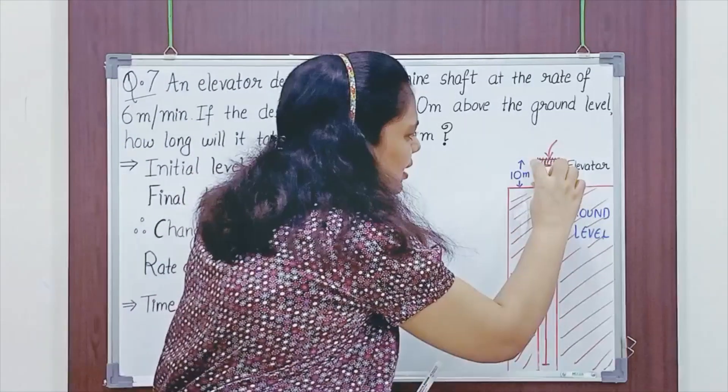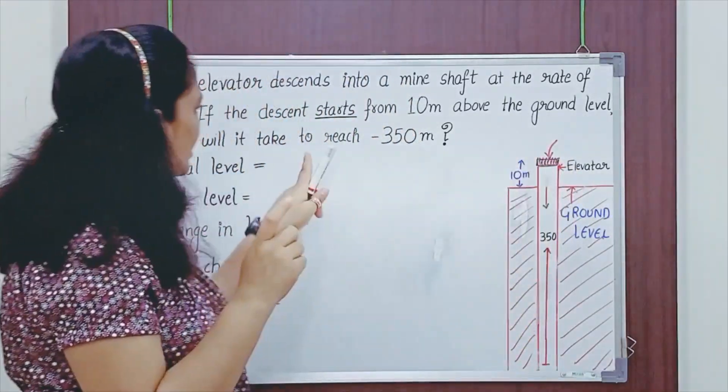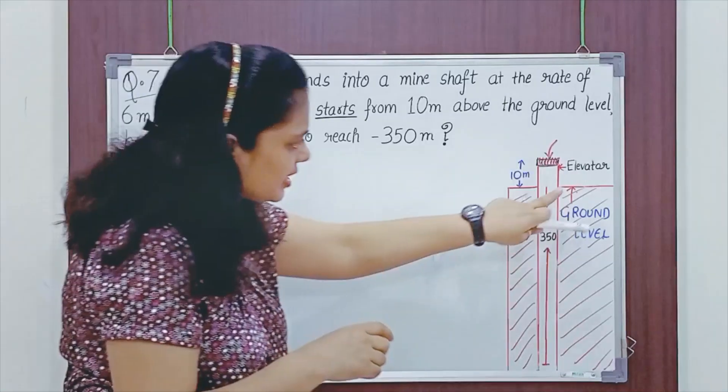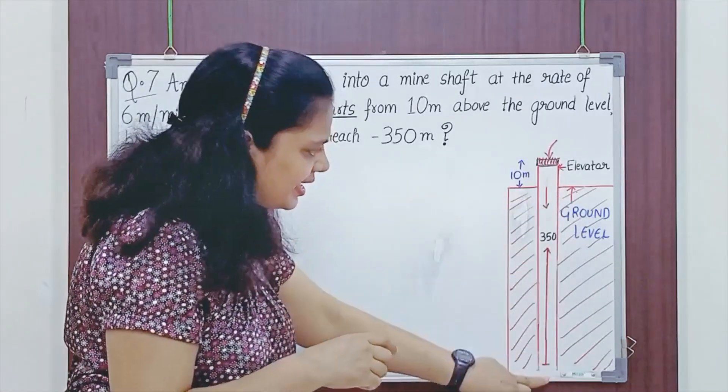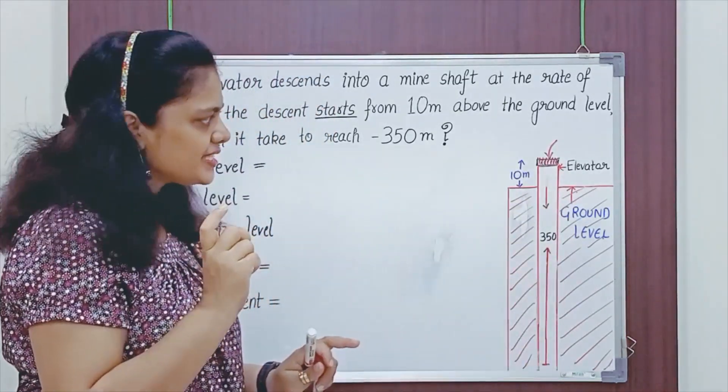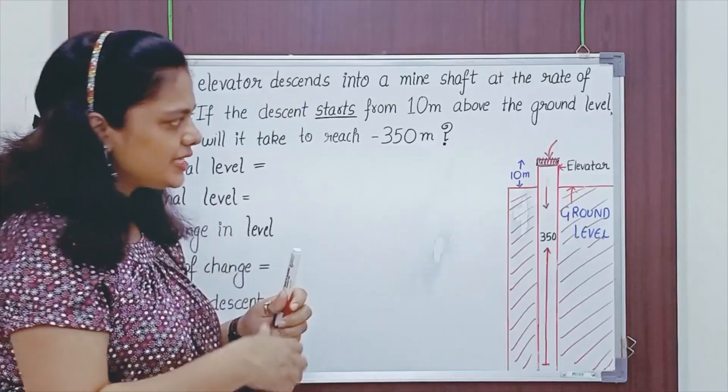The elevator is here, 10 meters above ground. Where does it need to reach? Minus 350 meters. This is ground, it needs to reach below the ground. So, this is minus 350 meters. Descent means fall down.